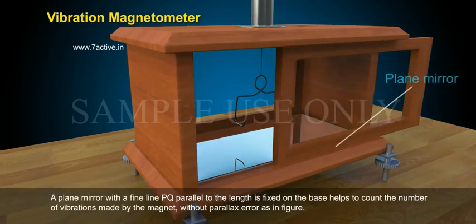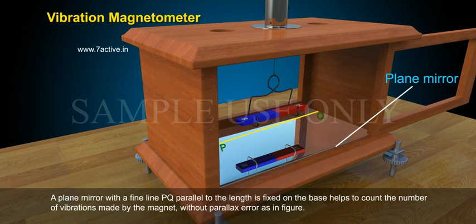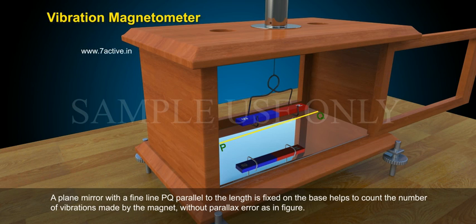A plain mirror with a fine line PQ parallel to the length is fixed on the base. This helps to count the number of vibrations made by the magnet without parallax error.